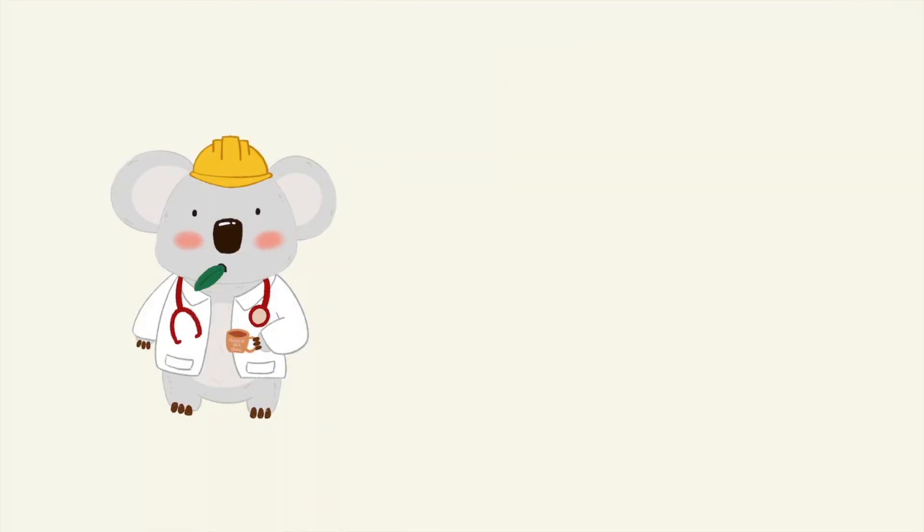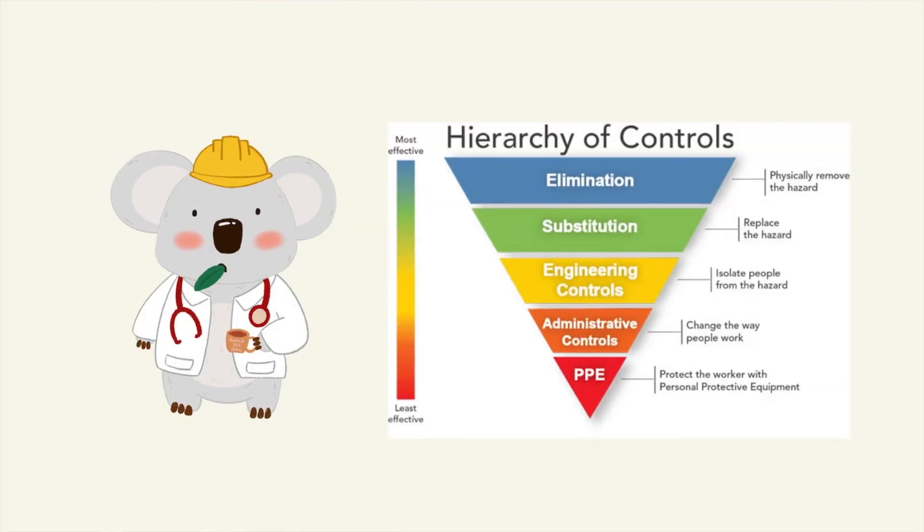In summary, in this video we discussed the hierarchy of controls as a system of managing risk in the workplace. Each of the types of controls have their own unique strengths and weaknesses and it is up to the employer to implement the appropriate controls in relation to the work that is performed.